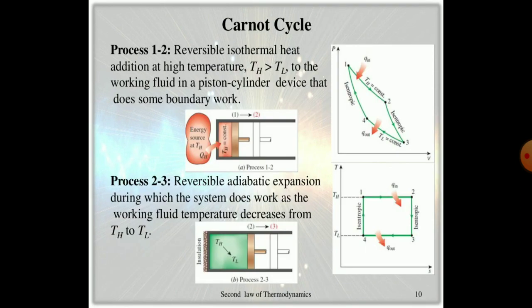Carnot gives the heat transfer cycle at different points between pressure-volume and temperature-entropy diagrams, PV and TS. From point 1 to 2: reversible isothermal heat addition at high temperature. From process 2 to 3: reversible adiabatic expansion during which the system does work.